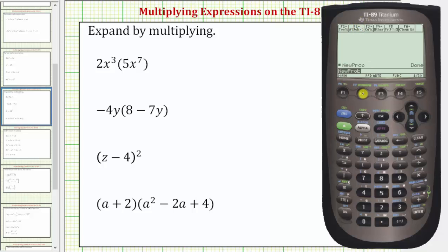So let's go ahead and press F2, expand as option three, so I'm going to go ahead and press three. And now we'll enter this product here, two x to the third times five x to the seventh. So enter two x raised to the power of three,